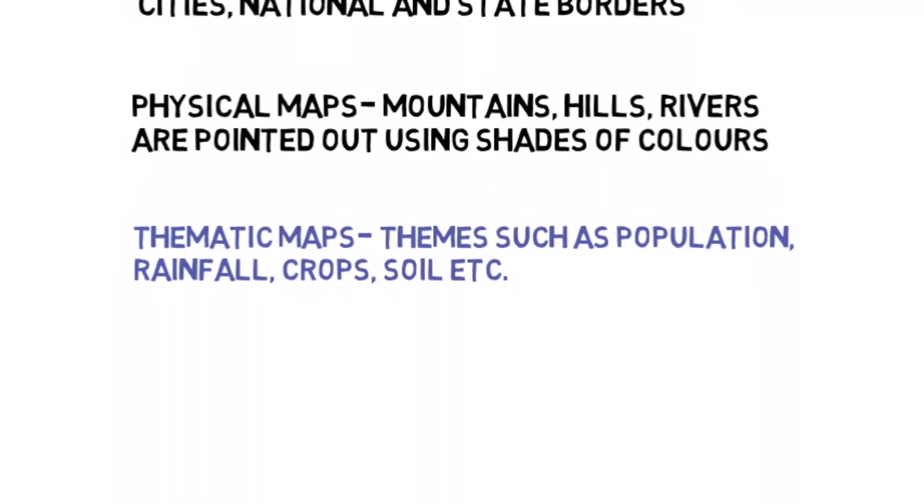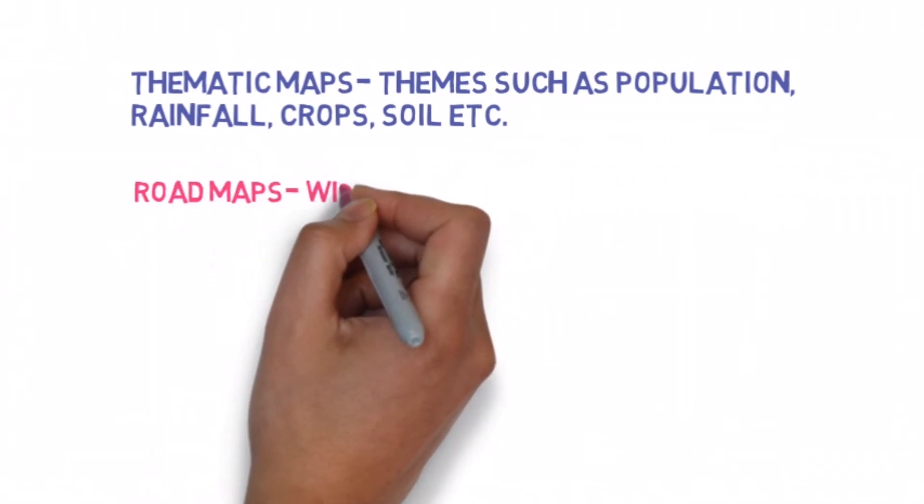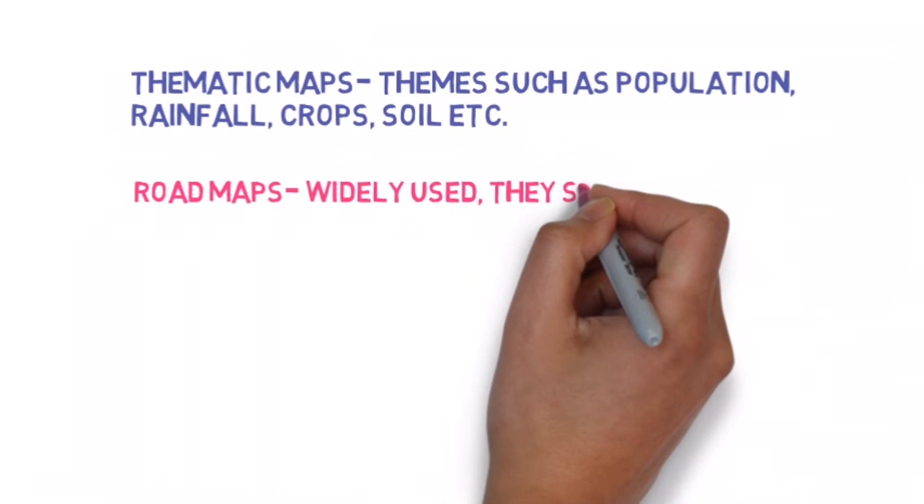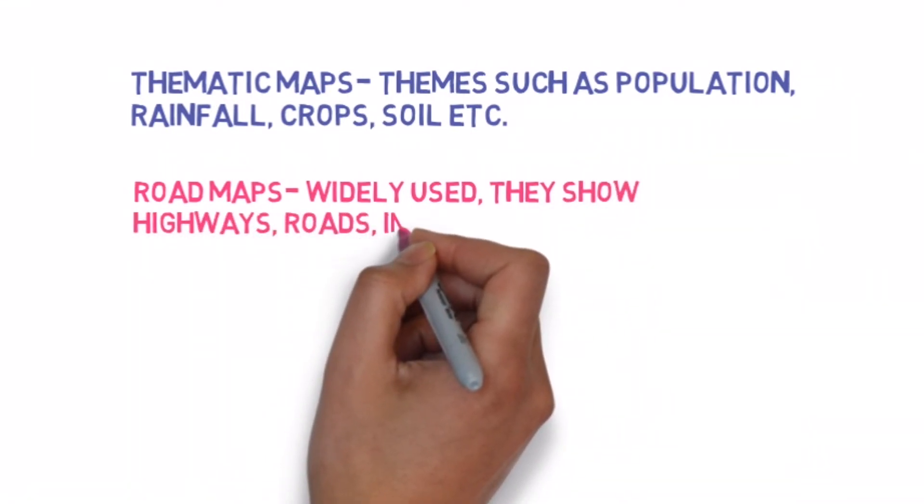The fourth kind are the road maps which are widely used these days. They are available in all our smartphones and these maps show the highways, the roads, as well as important landmarks such as airports, parks, important buildings, hospitals, etc.